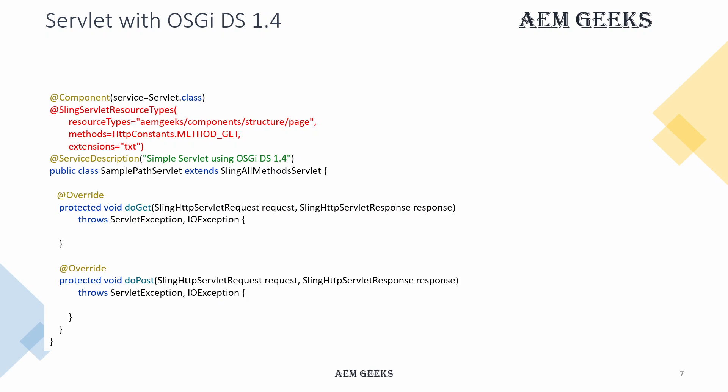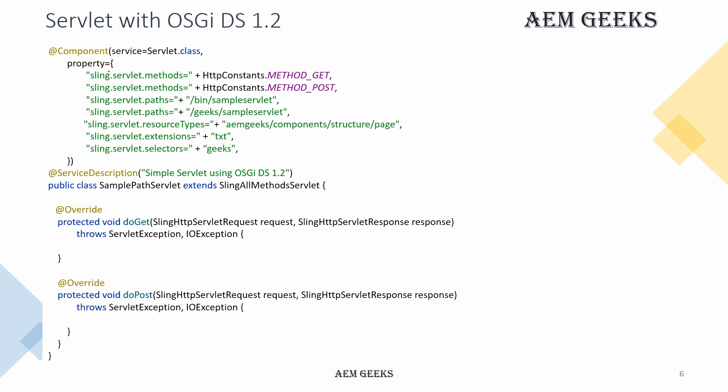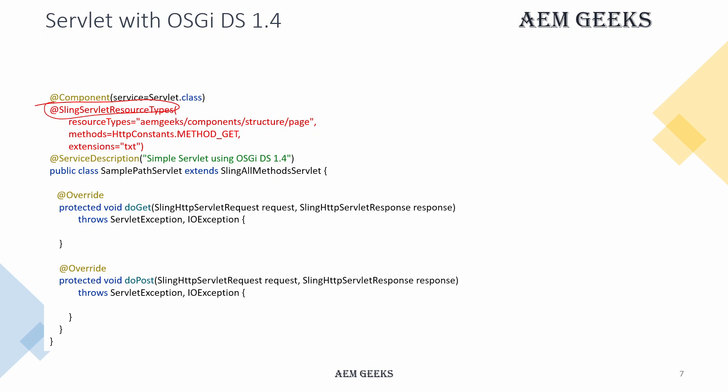Now let's understand how to write a servlet as per DS 1.4, or declarative services 1.4, also known as R7. In R7 annotations, there is a specific annotation for both types of servlets. To make a resource type servlet, there is a @SlingServletResourceTypes annotation. Inside it, you can define properties cleanly — unlike DS 1.2 where you had to write constants and equals signs. In DS 1.4, there are clean named variables like resourceType, extensions, and methods. Other concepts are the same. Inside @Component you still define service as servlet.